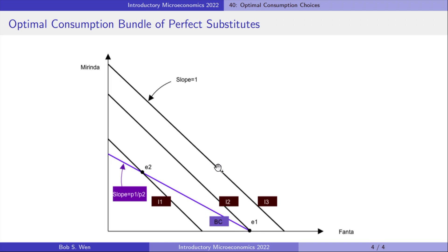She cannot afford any bundle on I3 because it is above her budget constraint everywhere. Although she can afford to buy bundle E2 on indifference curve I1.